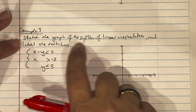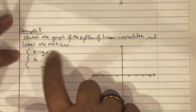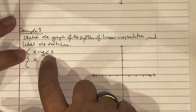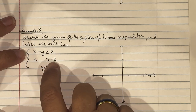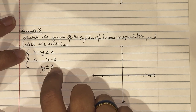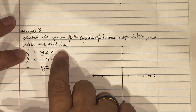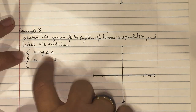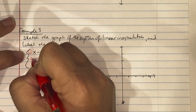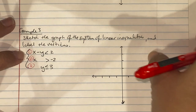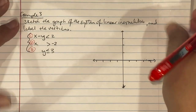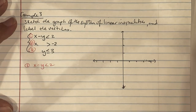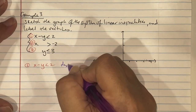Example three asks us to sketch the graph of the system of linear inequalities and label the vertices. This system has three equations: x minus y less than 2, x greater than negative 2, and y less than or equal to 3. Because it has three inequalities and they mention vertices, a three-sided figure forms where they intersect. Label them equations 1, 2, and 3.